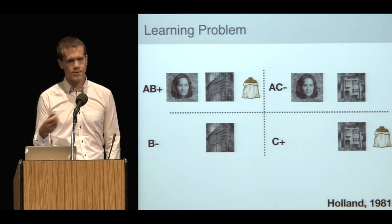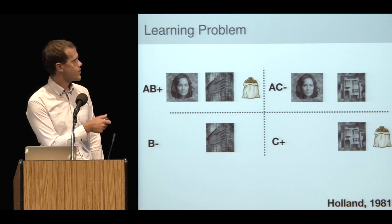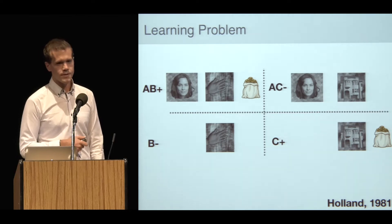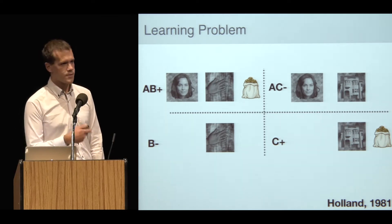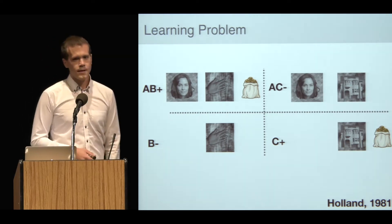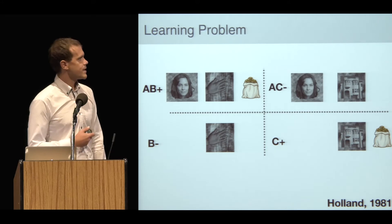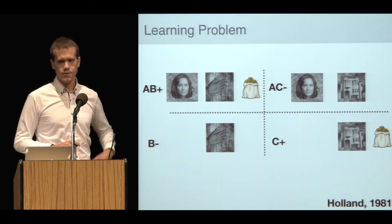In the original animal work, A, B, and C would correspond to things like tones and lights and cages. In my research with humans, they correspond to different visual categories. My subjects might have to learn that a face and a hand is associated with some outcome, whereas a hand on its own isn't. The key thing to understand about this task is that each individual feature provides no predictive information on its own. To learn these relationships, you need to form conjunctive representations of pairs of features.